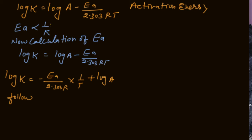So rate of reaction decreases. Now the calculation of Ea: log K equals log A minus Ea upon 2.303 RT.